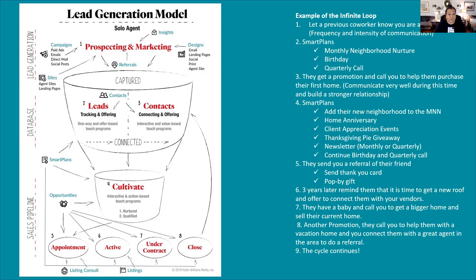Once we connect with leads and contacts, we can systematically have conversations through smart plans — that's the second thing we'll cover today. Think of communication with your database like making bank deposits: conversations and value offerings are deposits. Eventually we get to make a withdrawal in the form of a transaction. Once someone raises their hand and is ready to buy, sell, or invest, we drop them into Opportunities, which we'll look at tomorrow. The first stage is cultivating — for example, someone with bad credit can be connected with a lender for credit repair while you continue offering value.